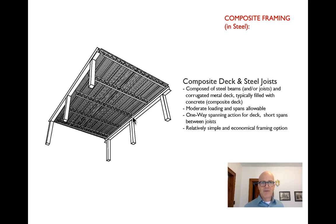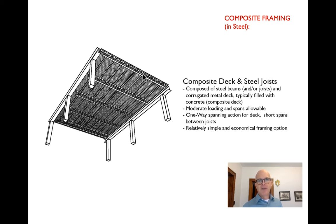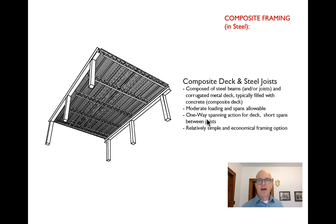Corrugated deck is a one-way system — strong along the corrugations and very weak across them — typically placed on other one-way systems like open web steel joists. Those joists then frame into girders that often take on the same directionality as the steel deck. So we have one direction from the deck, a second direction from the joists, and then linear elements going back to the original direction: basically making a two-way system out of one-way elements by changing orientation at every layer.